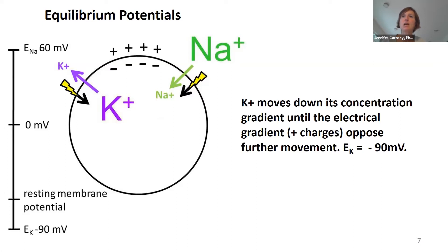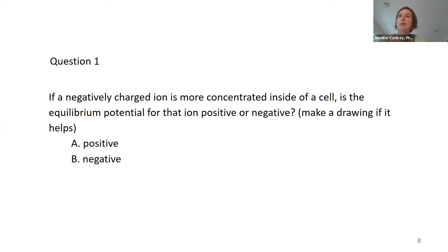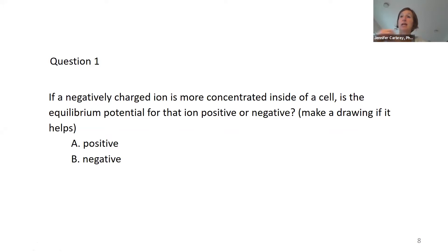Here's a question. If we have a negatively charged ion that's more concentrated on the inside of the cell than the outside, what will the equilibrium potential be? Will it be positive or will it be negative? Think about that — you might want to do a drawing. Draw a cell with some chloride ions that are more concentrated inside than outside. If you open a chloride channel, which way is the chloride going to flow because of the chemical gradient? And what will the charge be inside the cell because of that flow?